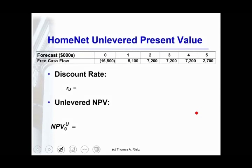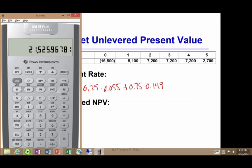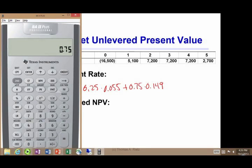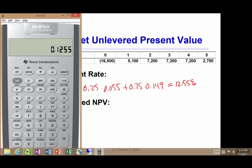First we get the unlevered cost of borrowing. Remember that 25% of the firm is financed with debt at a cost of 5.5% and 75% is financed with equity at a cost of 14.9%. So: 25% times 5.5% plus 75% times 14.9% gives us 12.55%, and we store that for now.